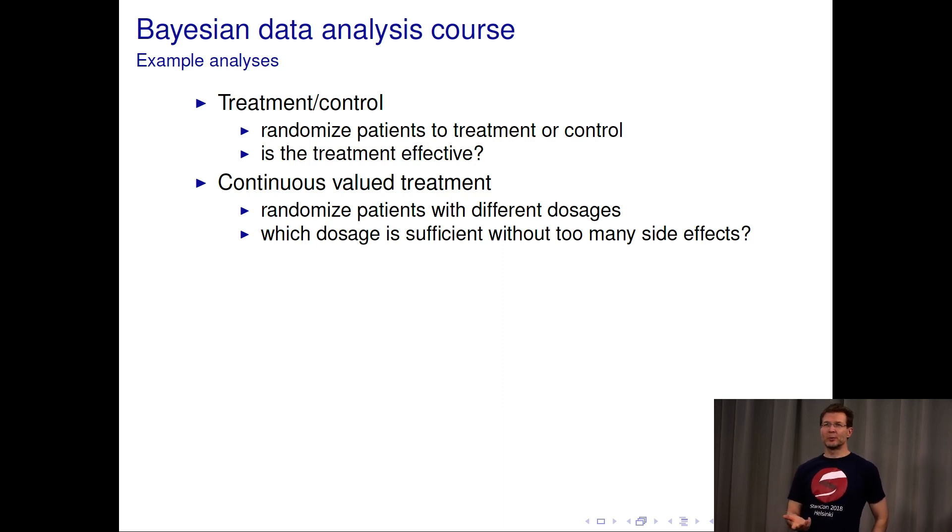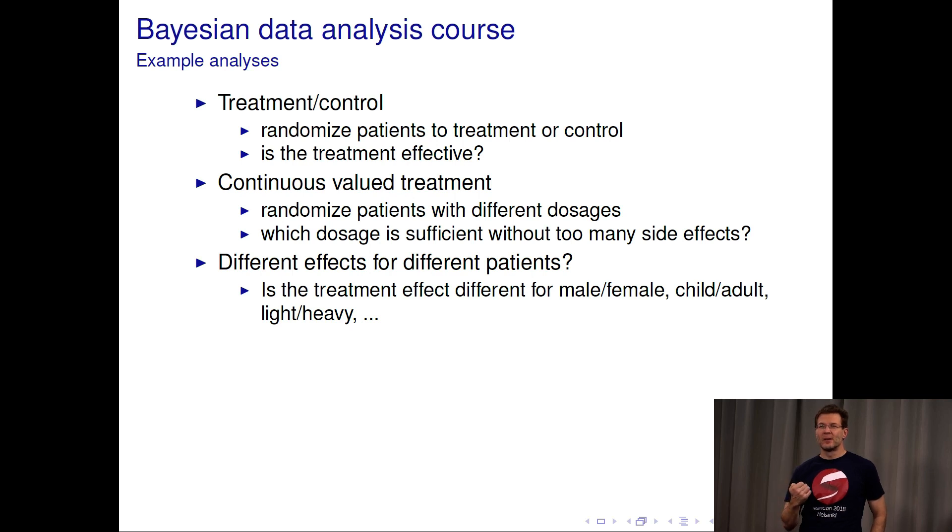We can also go to continuous valued treatment, where we randomize patients with different dosages. We can do design of experiments to choose these dosages: which dosage is sufficient without too many side effects? We can also ask if the treatment effect is different for males and females, children or adults, light or heavy patients. If we know more about genes and so on, there are many different types of analysis. The basic analysis types we go through are easily extensible to more complex cases after the course.